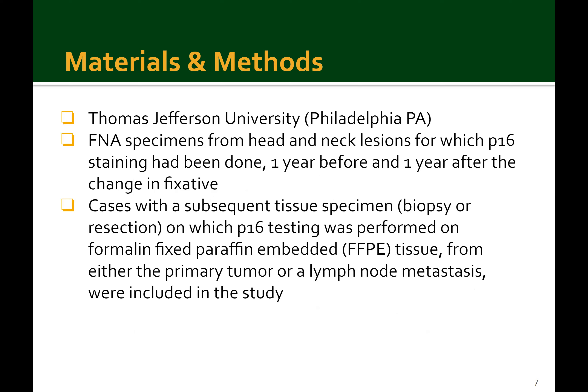The study took place at Thomas Jefferson University in Philadelphia, Pennsylvania. It was IRB approved, and they performed a database search to identify FNA specimens from head and neck lesions for which P16 staining had been performed on cell block material one year before and one year after the implementation of formalin instead of cytolite. Cases were included if they had a subsequent tissue specimen — either a biopsy or a resection — on which P16 testing had been performed on formalin-fixed paraffin-embedded tissue from either a primary tumor or a lymph node metastasis.